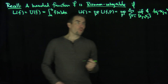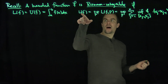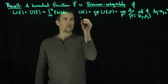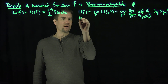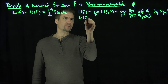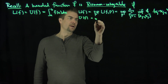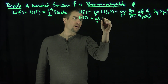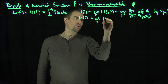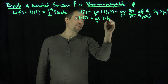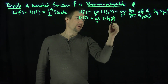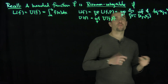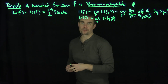And likewise, Ufp is the infimum over all partitions p of the upper sums Ufp. We get the same expression with infimum replaced by supremum.